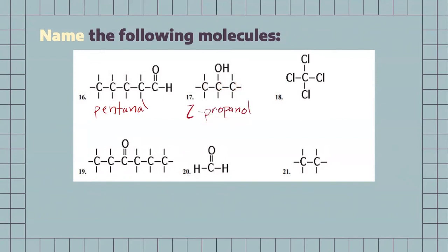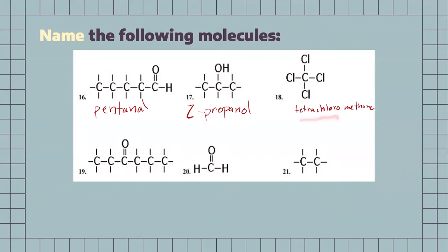Our next one, we have a carbon, but we have 4 chlorines attached to it. So, to signify what it is, it's going to be tetrachloro — tetra meaning 4. And since we only have a 1-carbon chain, methane at the end. Tetrachloromethane.